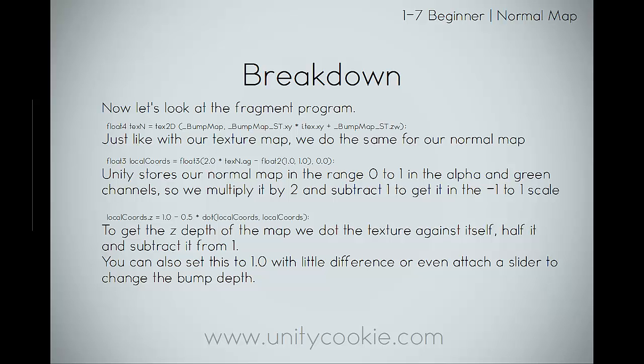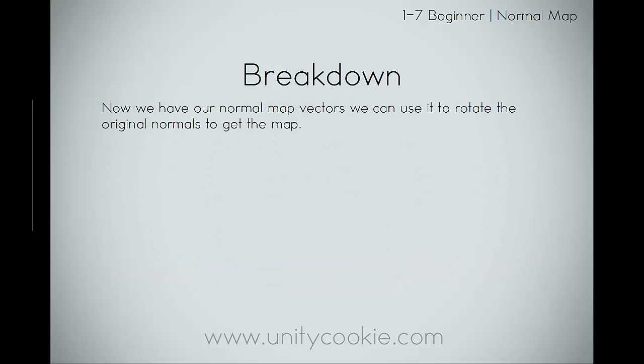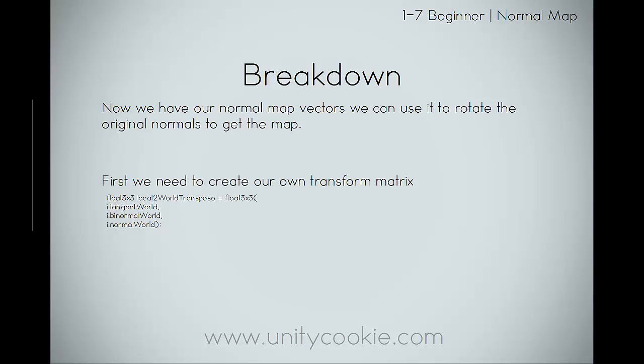Setting the Z to 1 gives very little difference from the dot product method. In this tutorial we'll use the official dot product method, but you can also attach a slider to local.z to control how much your normal map affects your mesh. Now that we have the normal map vectors, we can use them to rotate the original normals. First, we need to create a float 3x3 matrix — I'll call it localToWorldTranspose — containing the tangent world, binormal world, and normal world. These three control the X, Y, and Z rotation, and we need them in a transpose to do this.